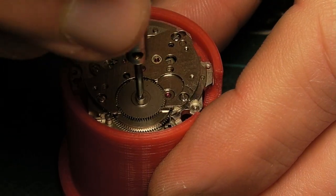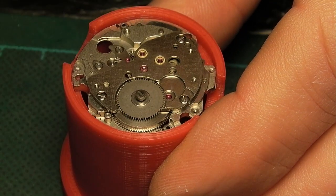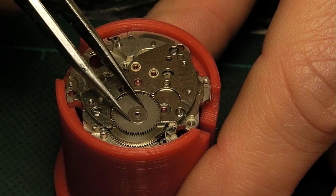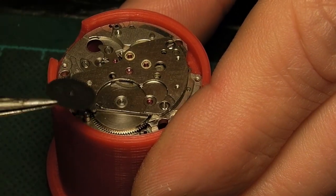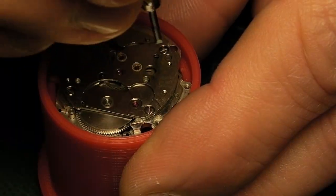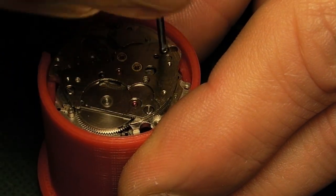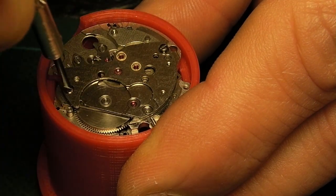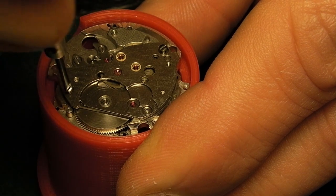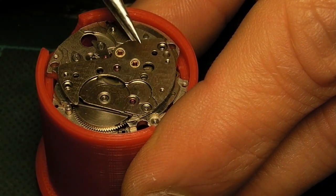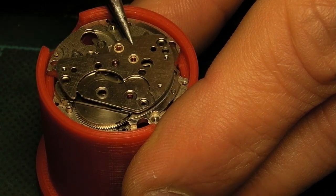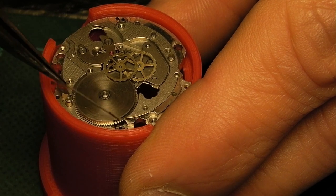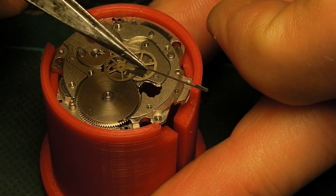Then we move back onto the top of the movement and remove the barrel arbor screw, the thick washer, and then the ratchet wheel. Quite often, especially with Seiko, you'll find that the barrel arbor screw and the washer are a complete unit—in this case they are separate. There are then three screws which hold the barrel and train bridge in place. These are removed and then the bridge is lifted away carefully.